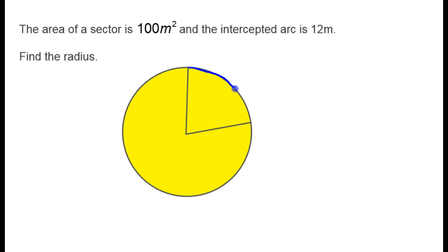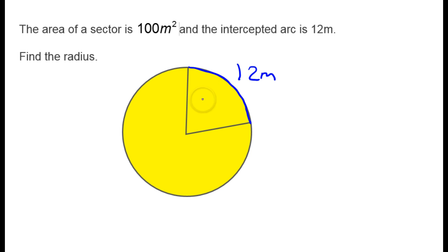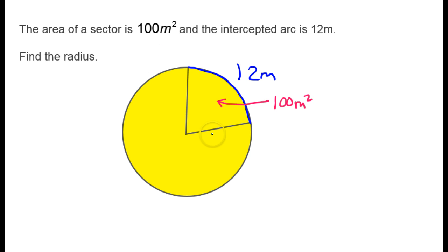So here is the intercepted arc, and that is 12 meters. Meanwhile, the area of this sector is 100 square meters, and we are being asked to find the radius.